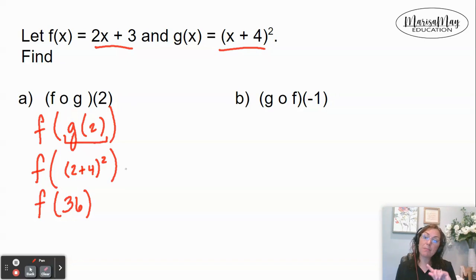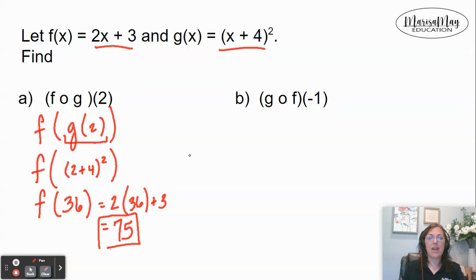This means I'm going to replace the x in the f function with 36. So now I've got 2 times 36 plus 3. 2 times 36 is 72, 72 plus 3 is 75. So this is my answer for f of g of 2.